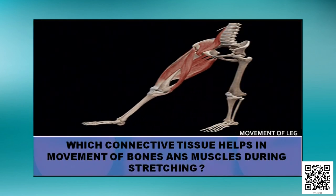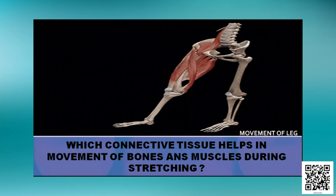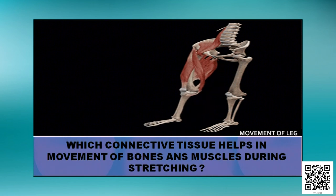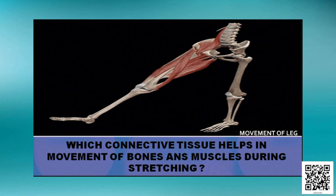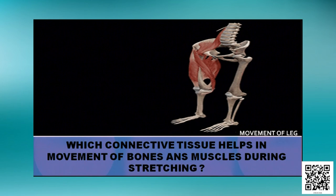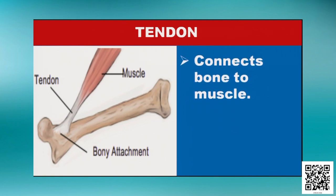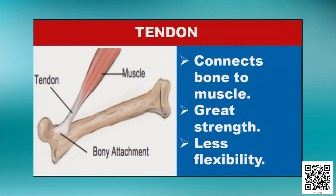When we stretch our leg, the bone moves and the muscle contracts and expands. The connective tissue that helps in this movement is tendon. Tendon connects bone to muscle. In the picture, the white-colored part between muscle and bone is the tendon. Tendon has great strength but very little flexibility.